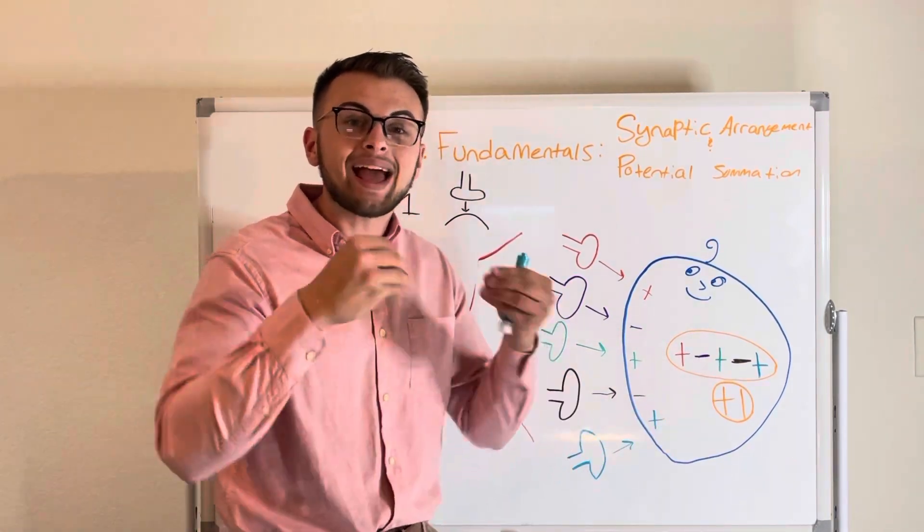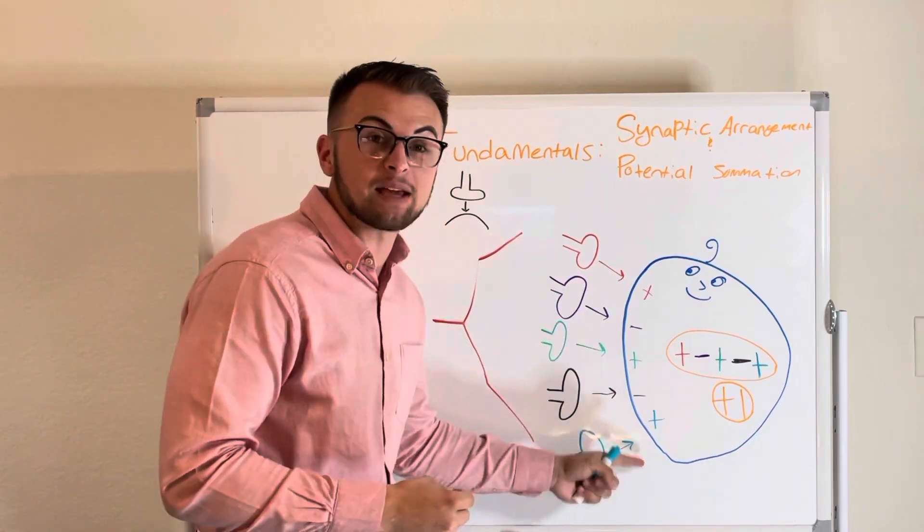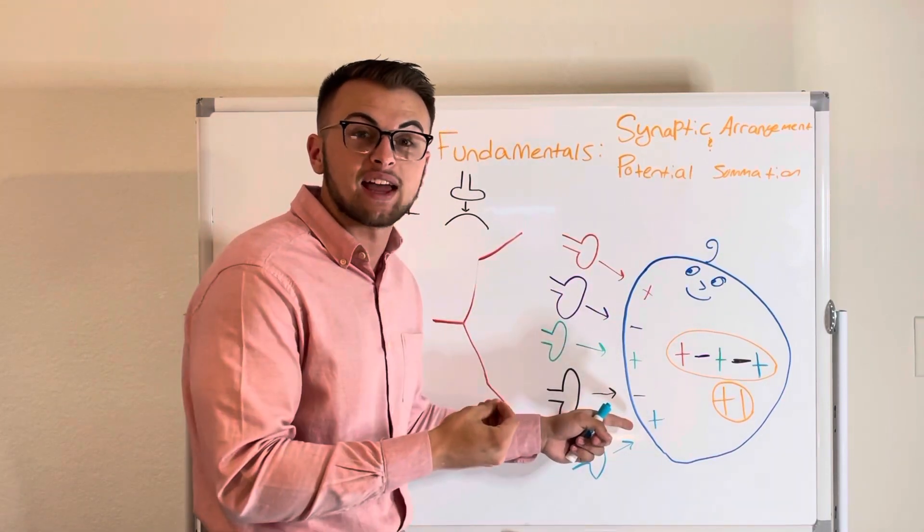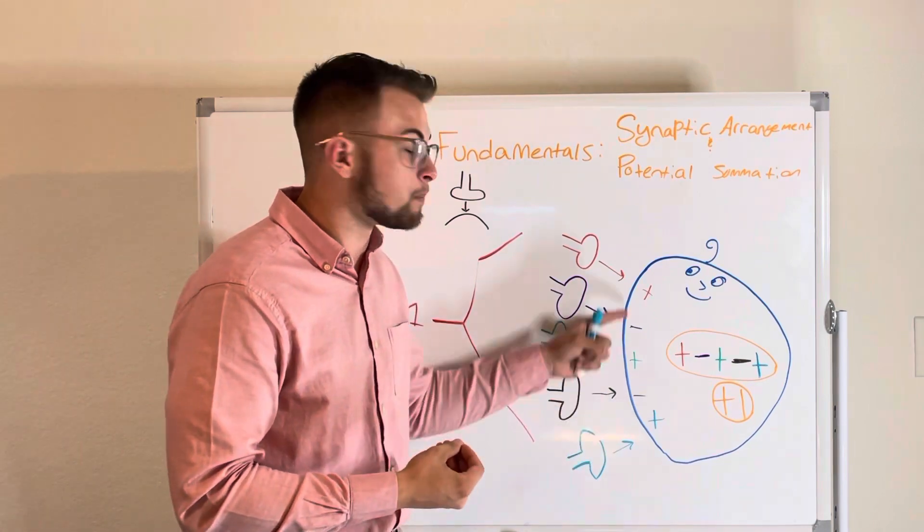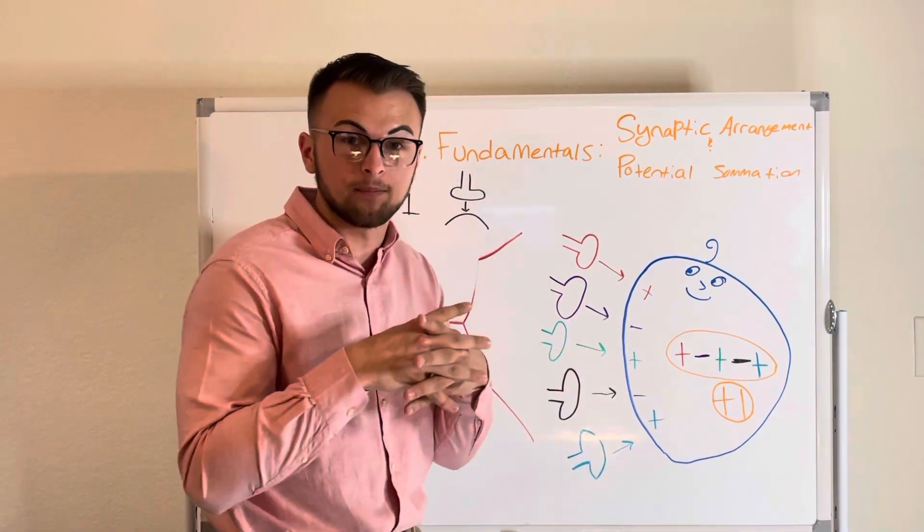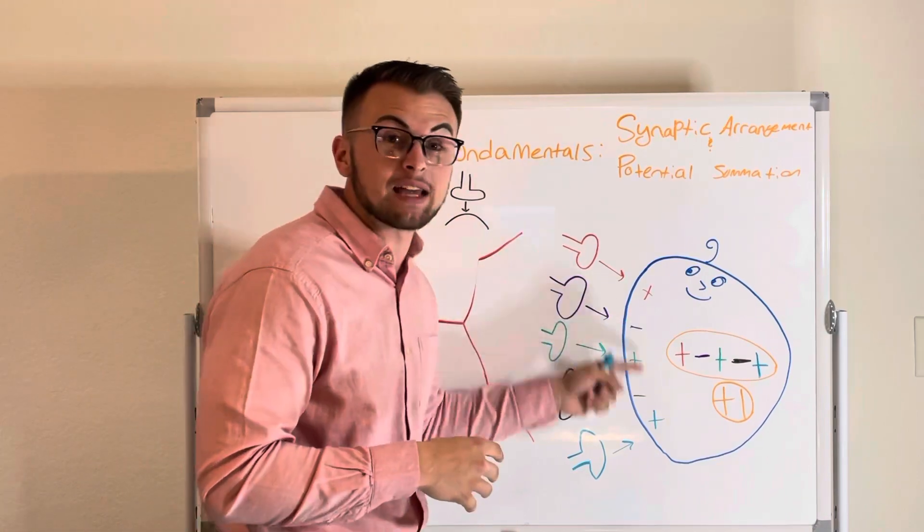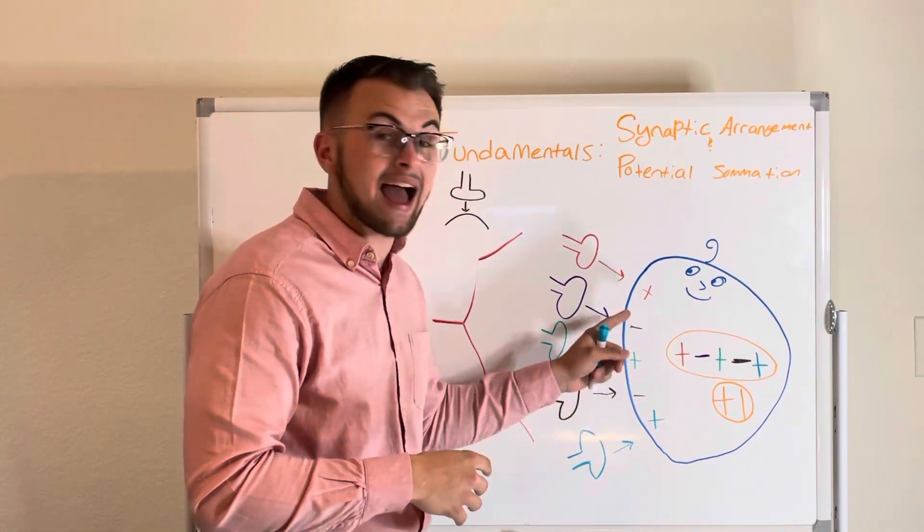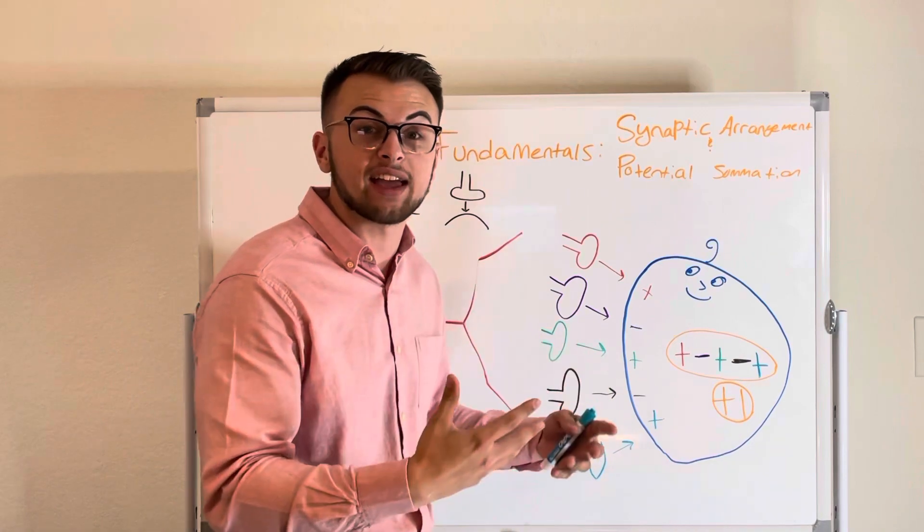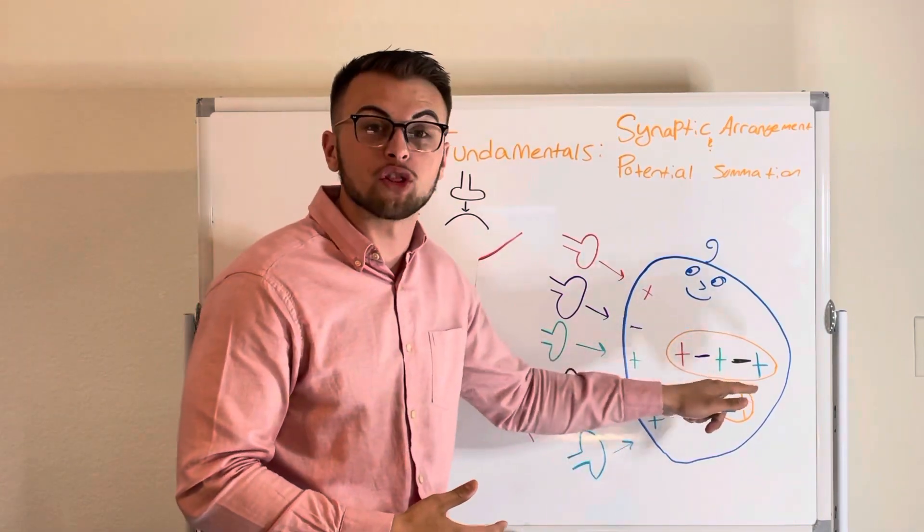When we add all of our potentials in the same space, we say that this cell has spatial summation. This means that potentials that arrive at the same space can either add up or in our case cancel each other out.